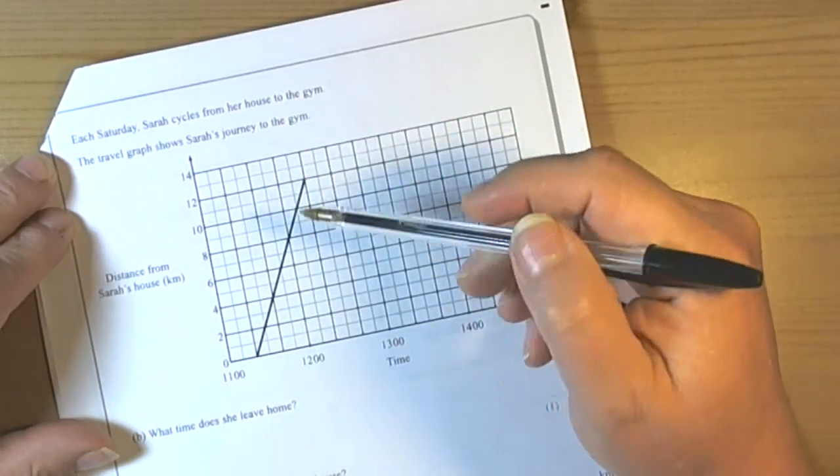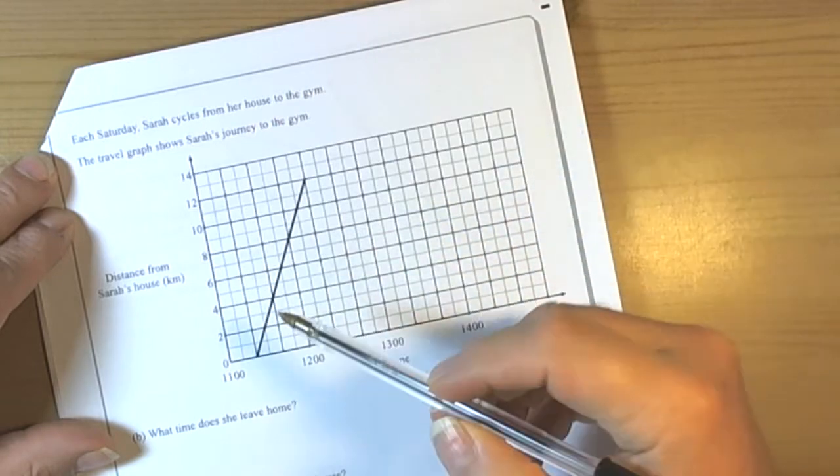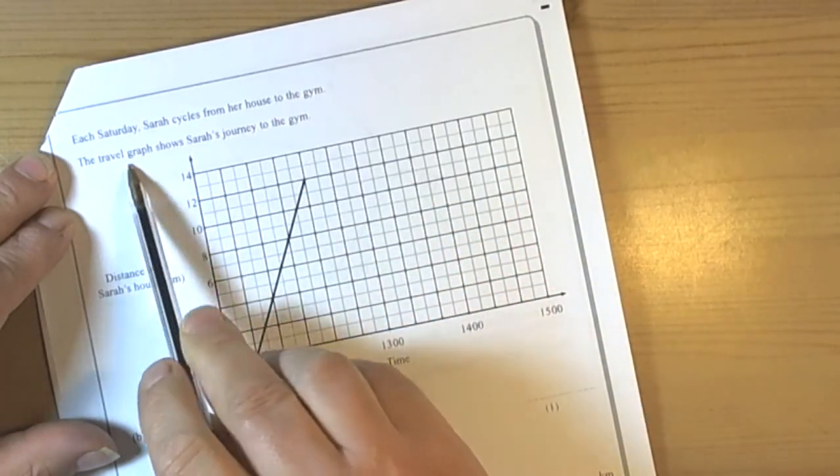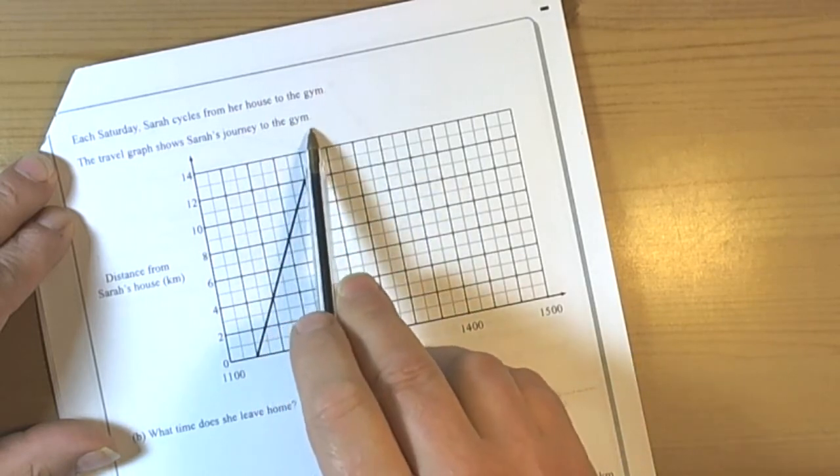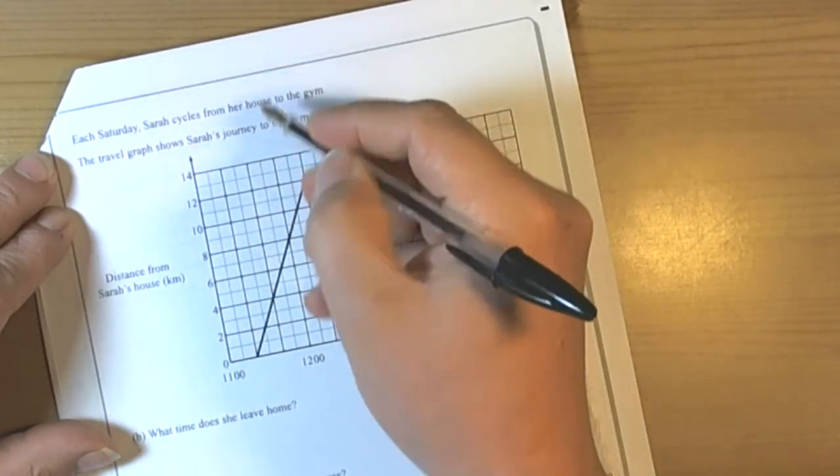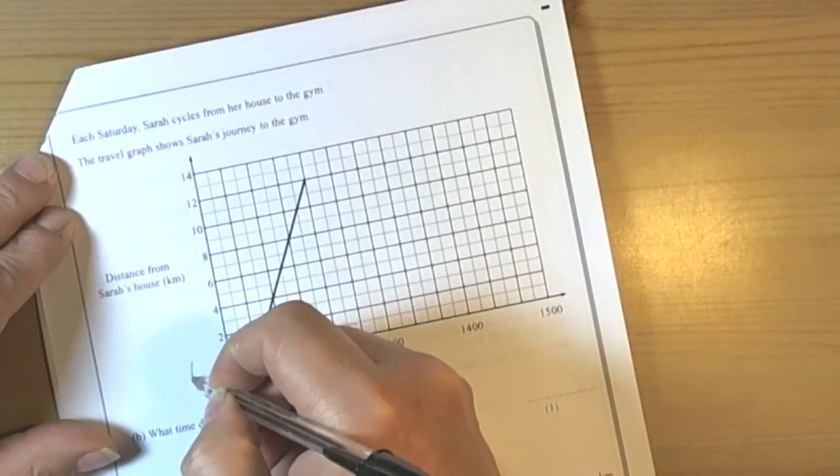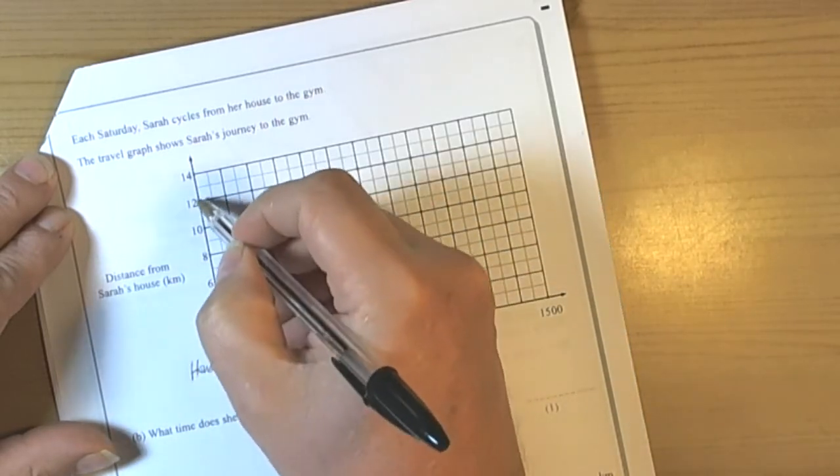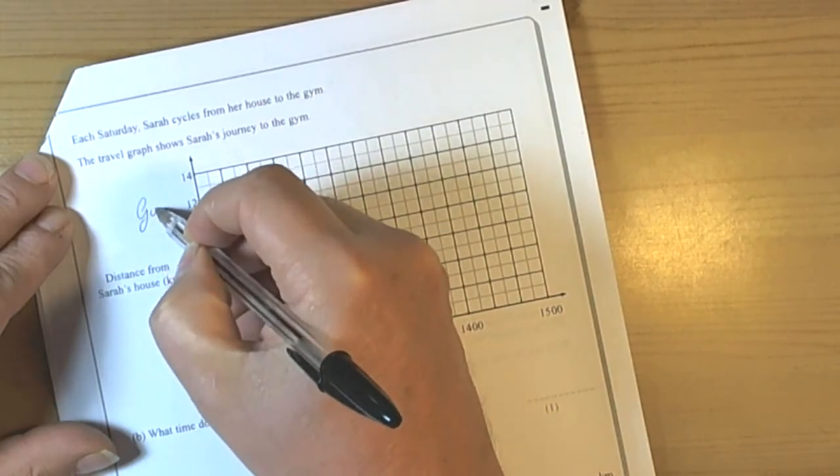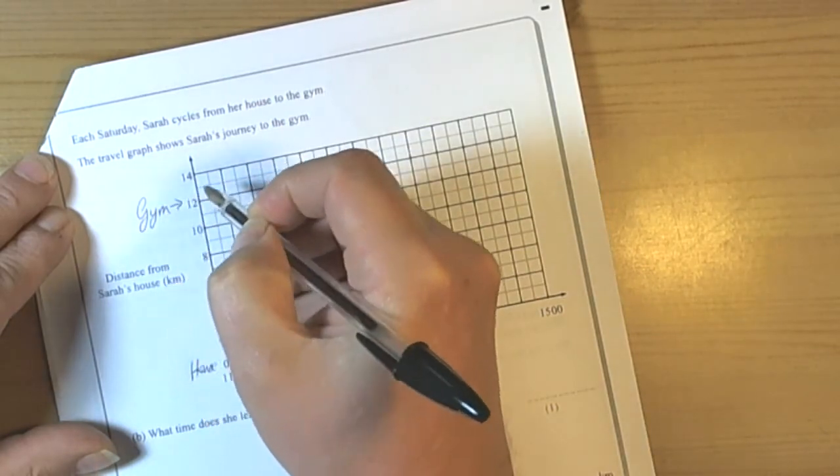This question is about a travel graph and we've got some information here. Saturday Sarah, the travel graph shows her journey to the gym. So she's leaving her house to the gym. Her house is down at the bottom here because that's where she's leaving, and she's going to the gym, so the gym must be here.